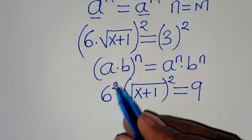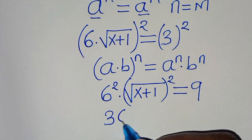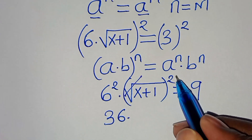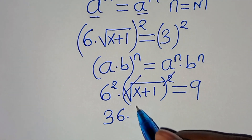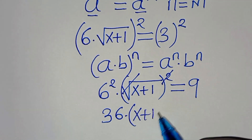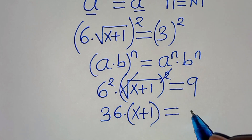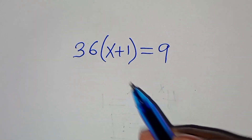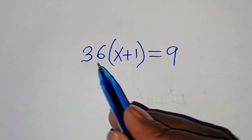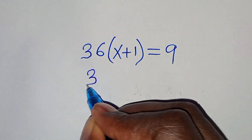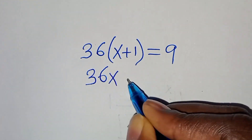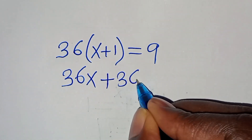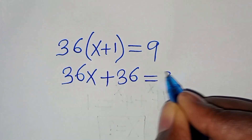So, 6 squared is 36, multiplied by — now eliminating the square root of x plus 1 by squaring — this is equal to 9. Opening the parenthesis: 36 times x is 36x, then plus 36 times 1 is 36, and this is equal to 9.